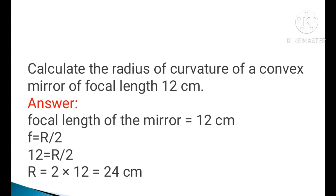The focal length f is equal to r by 2. That means r is equal to 2f. r is equal to the focal length. That means 2 into 12, which equals 24 cm.